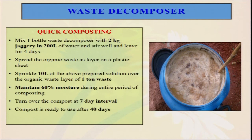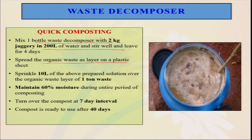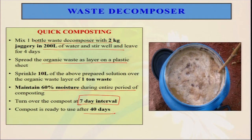This is the OS Decomposer method for quick decomposition. Mix a bottle of OS Decomposer with jaggery in 200 liters of water, spread the organic waste on a plastic sheet, maintain always 60 percent moisture, and turn over the compost at 7-day intervals. The compost is ready to use after just 40 days. Previously, in the case of the Bangalore method and other methods, 5 to 7 months is needed for waste decomposition, but with the help of this OS Decomposer, we can produce good quality compost within only 40 days. It is very cheap, you only need to purchase once, and the time is also much less.